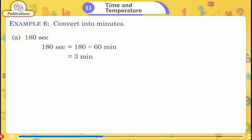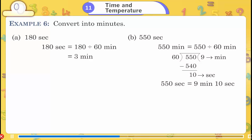Example 6: Convert to minutes. A) 180 seconds = 180 ÷ 60 = 3 minutes. B) 550 seconds = 550 ÷ 60 = 9 minutes 10 seconds.